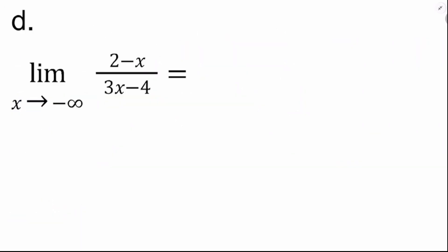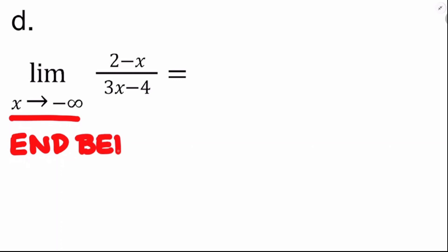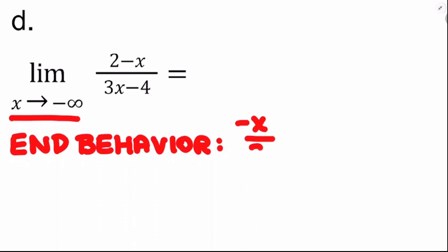For the last limit, x approaches negative infinity — so it's end behavior. Dividing the leading terms: negative x over 3x equals negative 1 over 3. The end behavior is that as x approaches positive or negative infinity, y approaches negative 1 third. So that's the value of the limit.